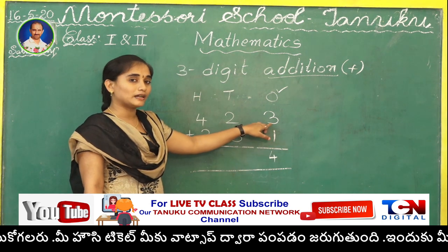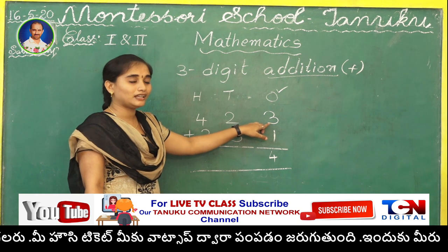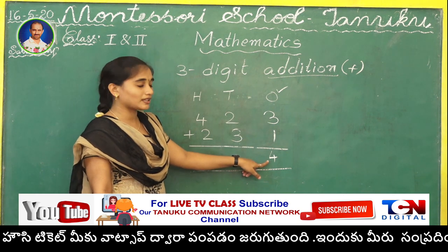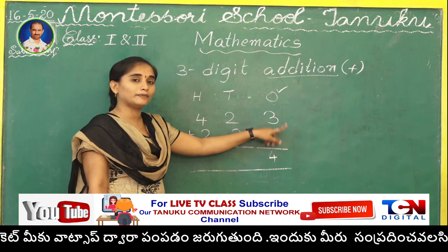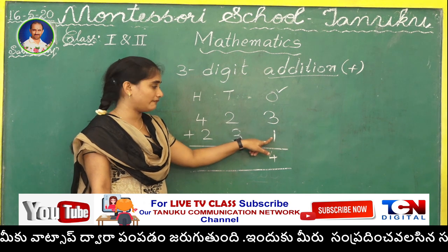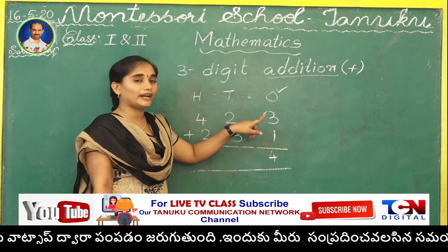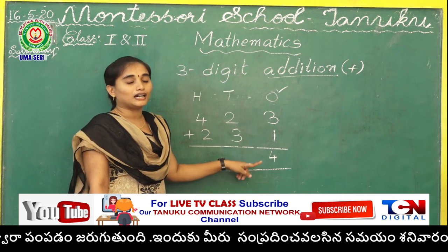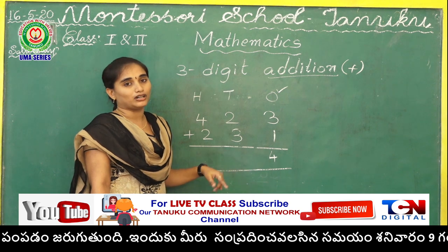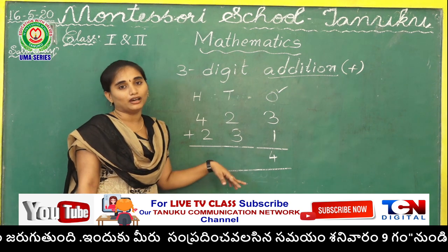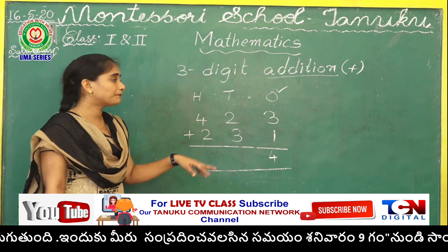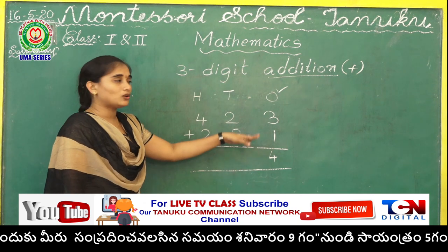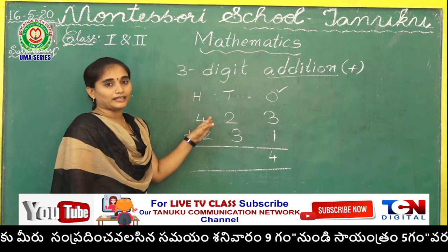4. So 4 will be the answer. We have already learned the property: when we add 1 to any number, we get the next number. Ones place is completed. Now, tens place.